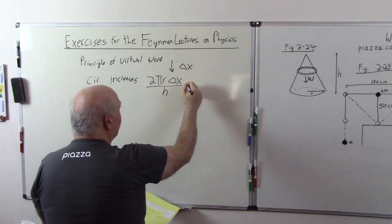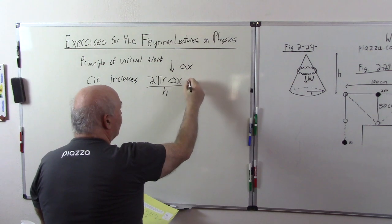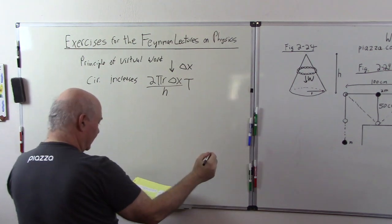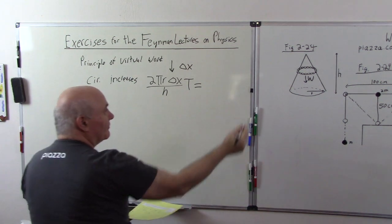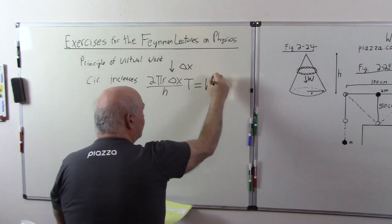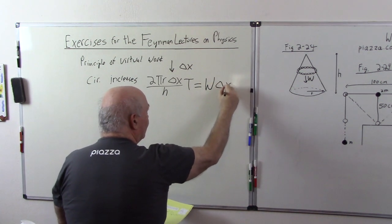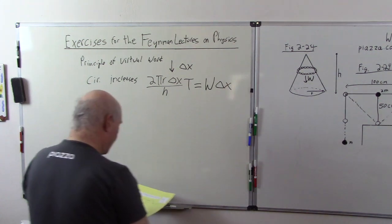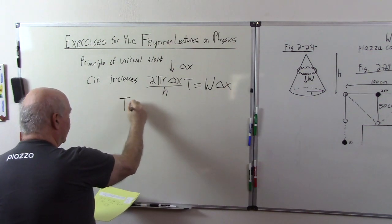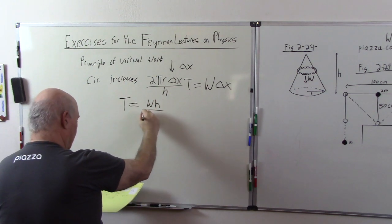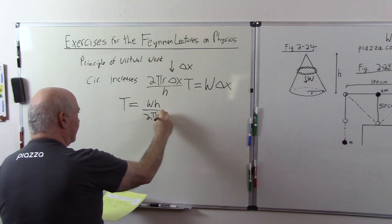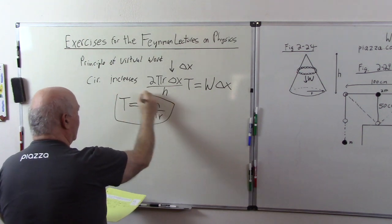And now this times, this is the distance that the chain increases times the tension in the chain. That will give me the work. And that should be equal to the change in the potential energy, which is W times del x. W is the weight. So we get the tension is equal to WH over 2 pi r.